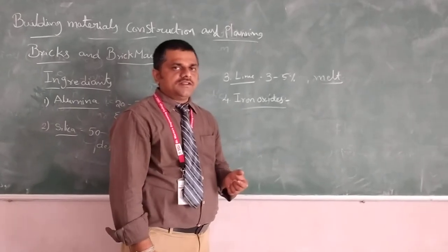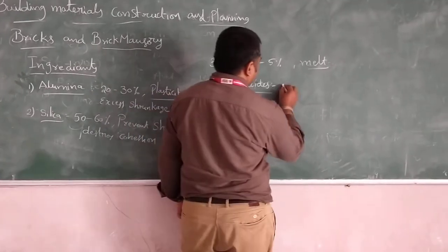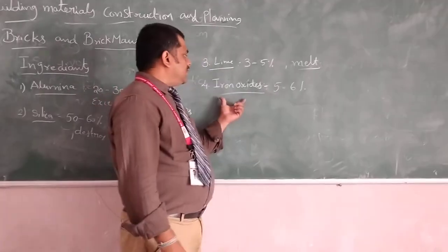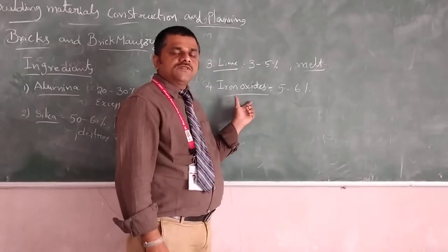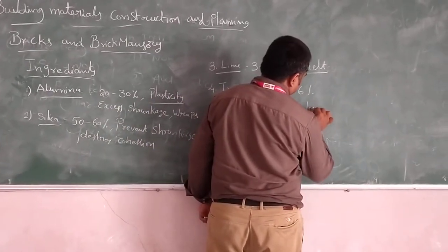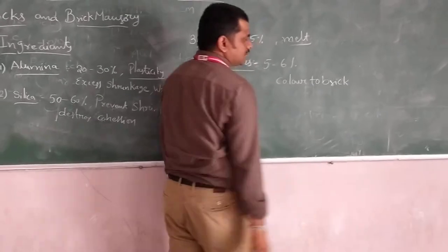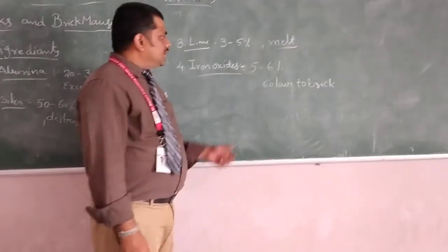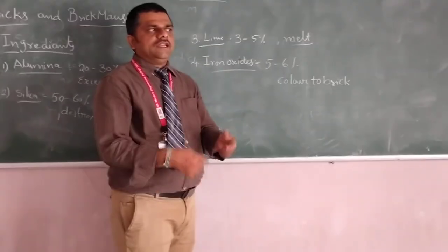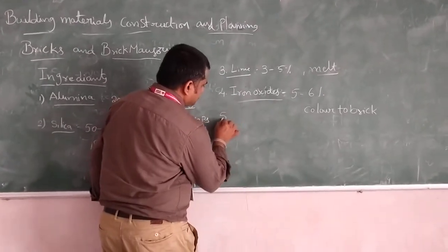There are different types of iron materials. The percentage of iron is 5 to 6 percent or less. This iron gives the color of bricks. If it is excess, it decolors the brick. Next one is magnesia.